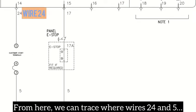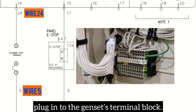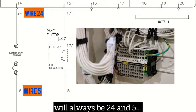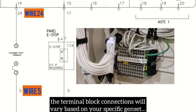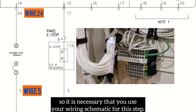From here, we can trace where wires 24 and 5 plug into the genset's terminal block. Please note that although the two remote start connection wires will always be 24 and 5, the terminal block connections will vary based on your specific genset, so it is necessary that you use your wiring schematic for this step.